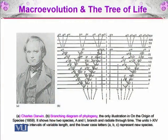Here on the right side of the picture, you can see Charles Darwin. Darwin also made some branching diagrams of phylogeny, and this was the only illustration in his publication On the Origin of Species. In this diagram, you can see two species, one labeled A and another labeled I.